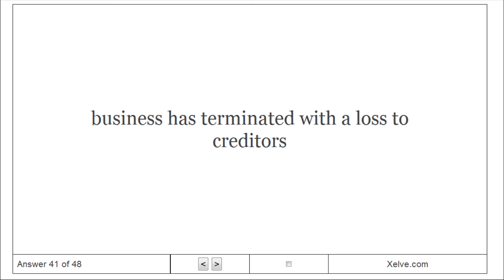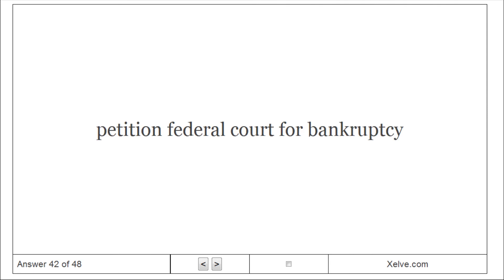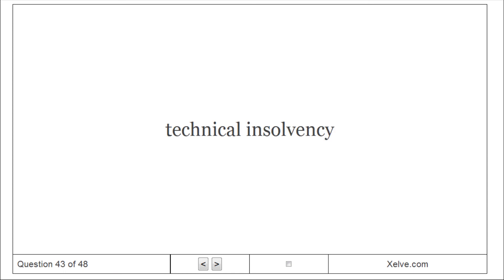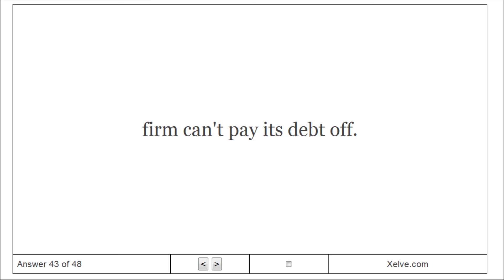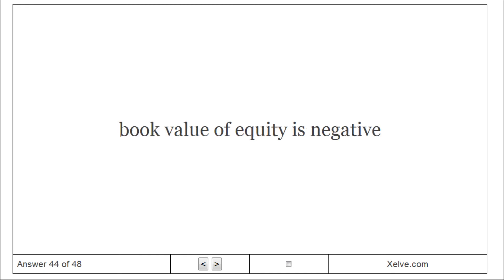Legal bankruptcy involves a petition to federal court for bankruptcy. Technical insolvency is when a firm cannot pay its debts. Accounting insolvency is when the book value of equity is negative.